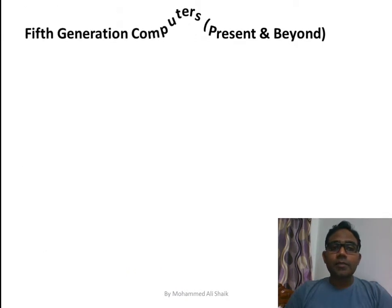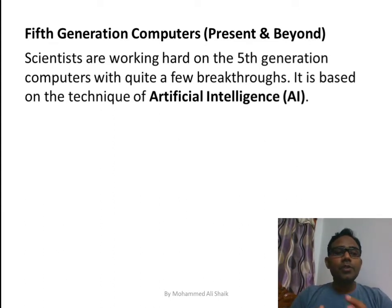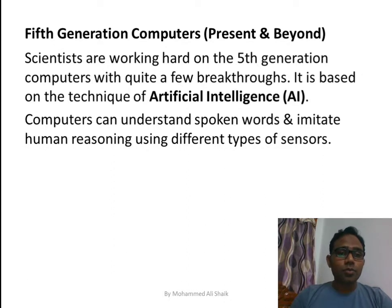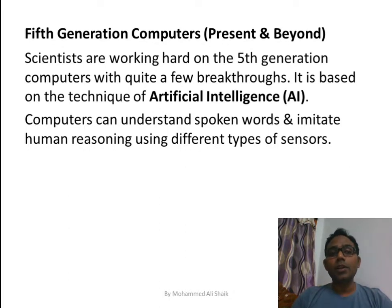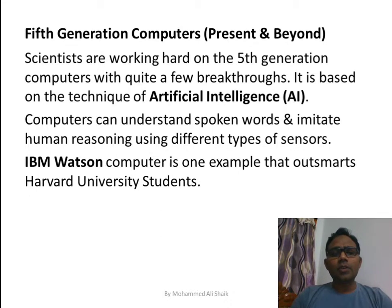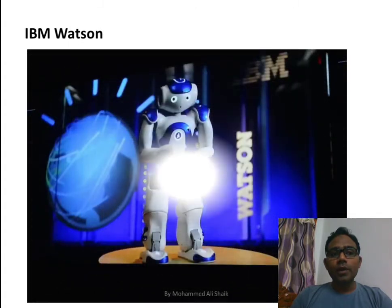Fifth generation computers are from the present and beyond. Scientists are working on these computers, which are completely based on artificial intelligence dealing with robots. Computers can understand spoken words and imitate human responses using different types of sensors, using voice user interfaces instead of character or graphical user interfaces. Examples under research include IBM Watson and Sophia. IBM Watson is known for outsmarting Harvard University students.